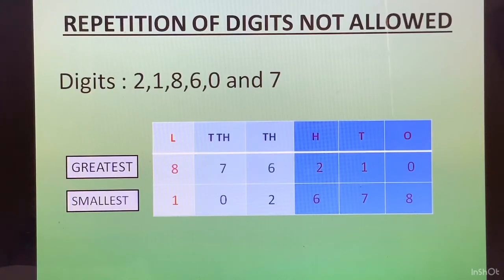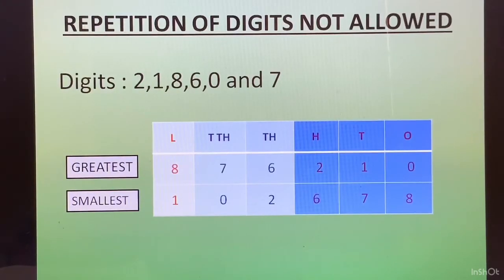This is how you form the greatest and the smallest number. There is no problem with the greatest number. But if there is a 0 in the given digits, we must be careful not to place it in the leftmost position.